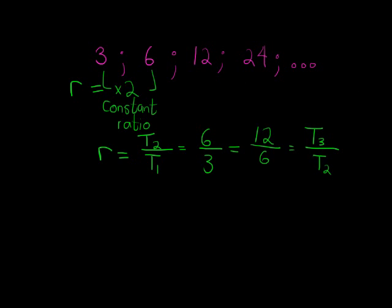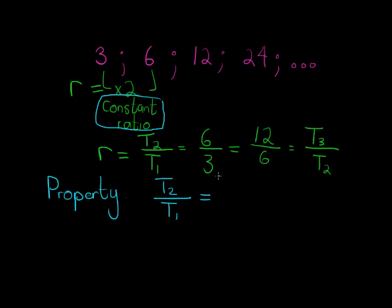And now this brings us to the geometric property. So this is the identifier, it has a constant ratio. And now for the geometric property is that if I take term 2 and I divide it with term 1, I get the same answer then when I take term 3 and I divide that with term 2.